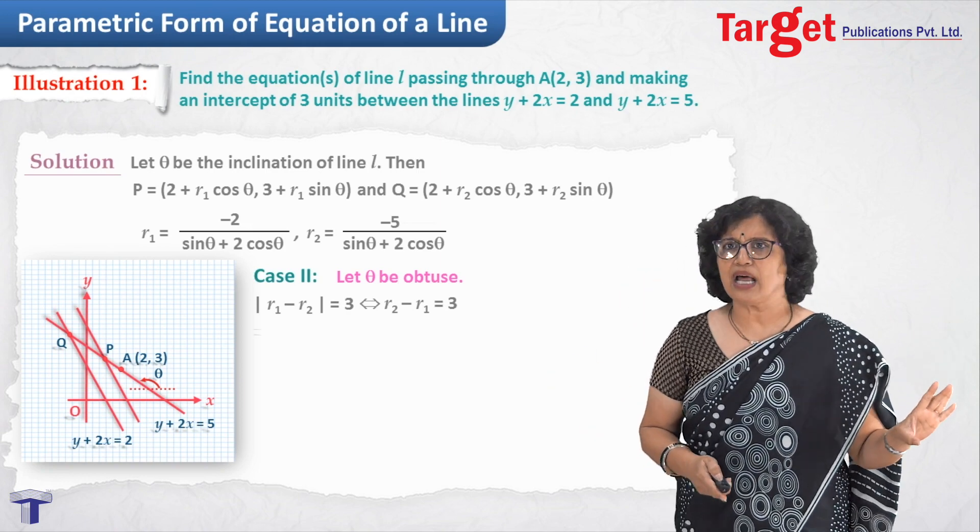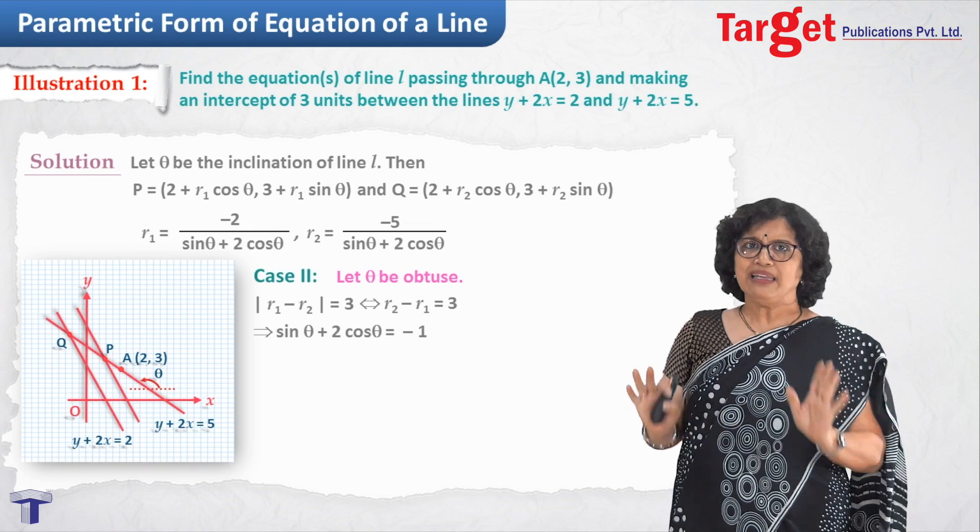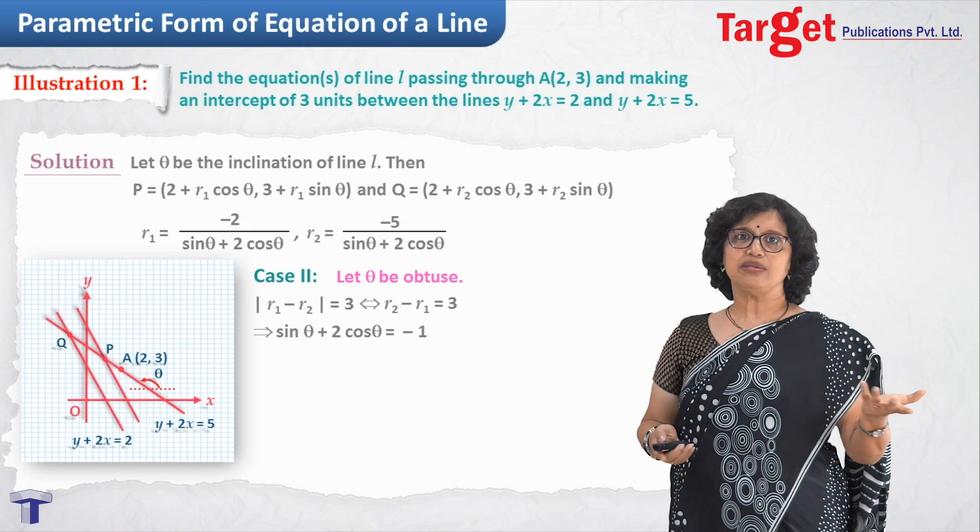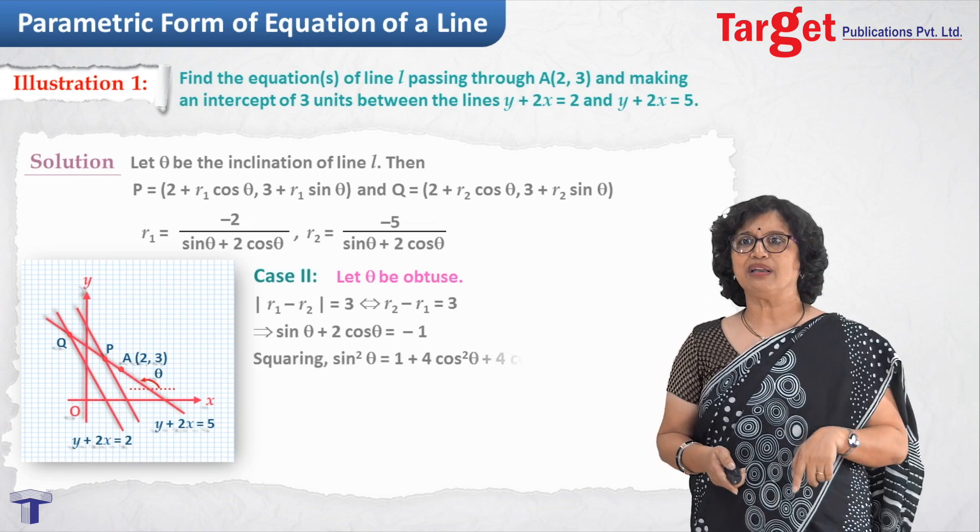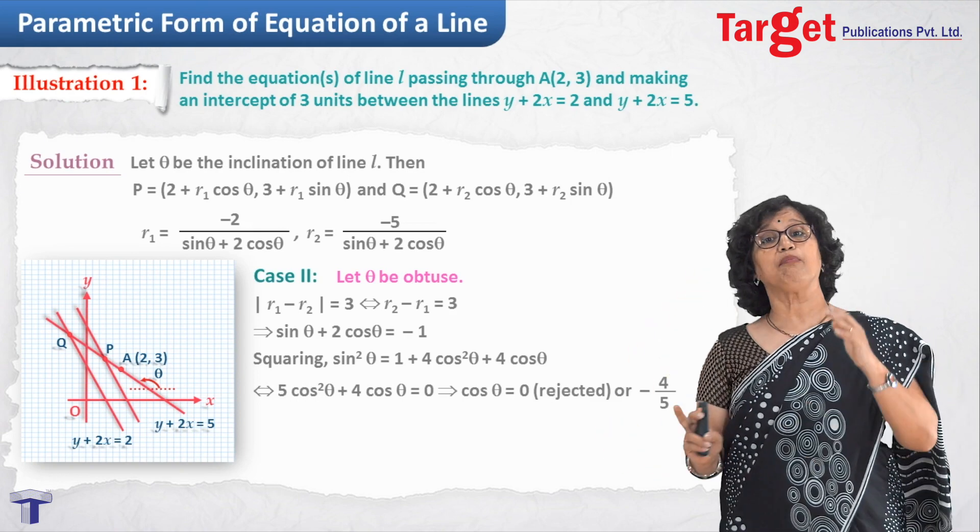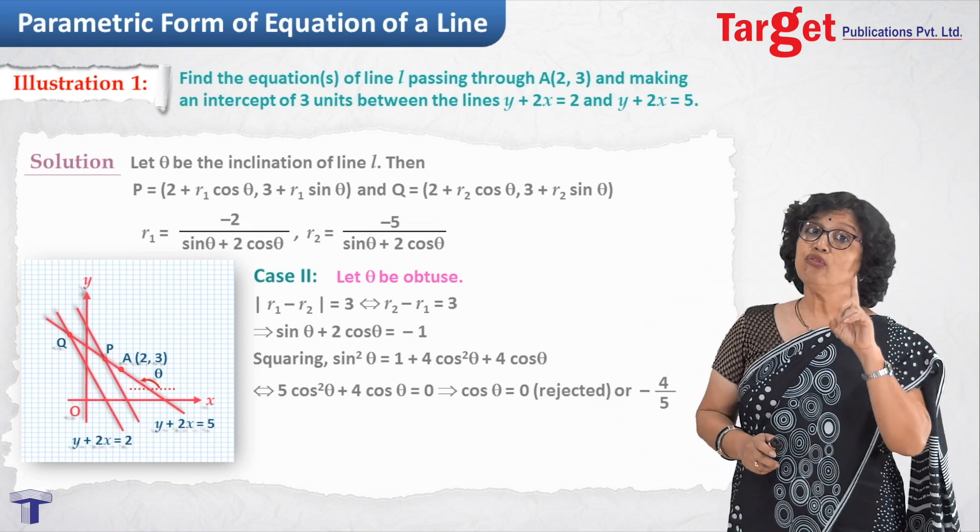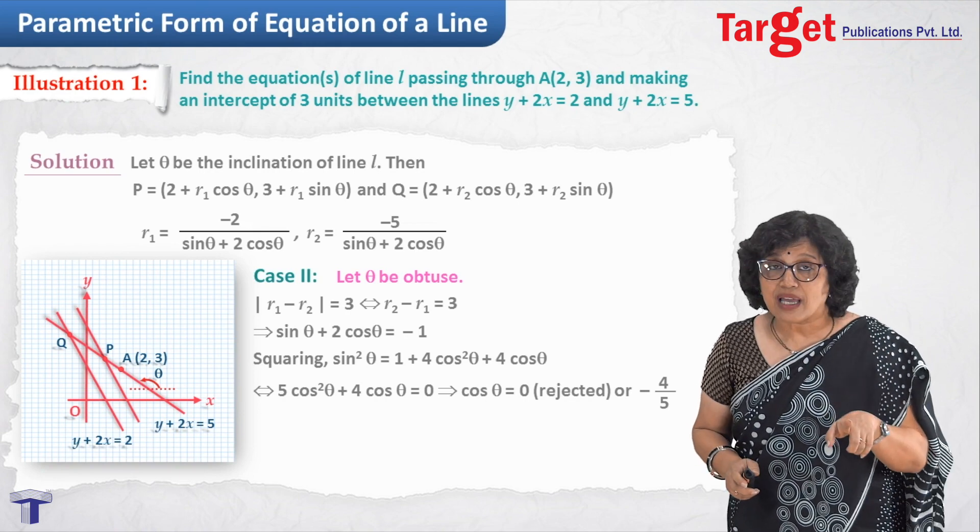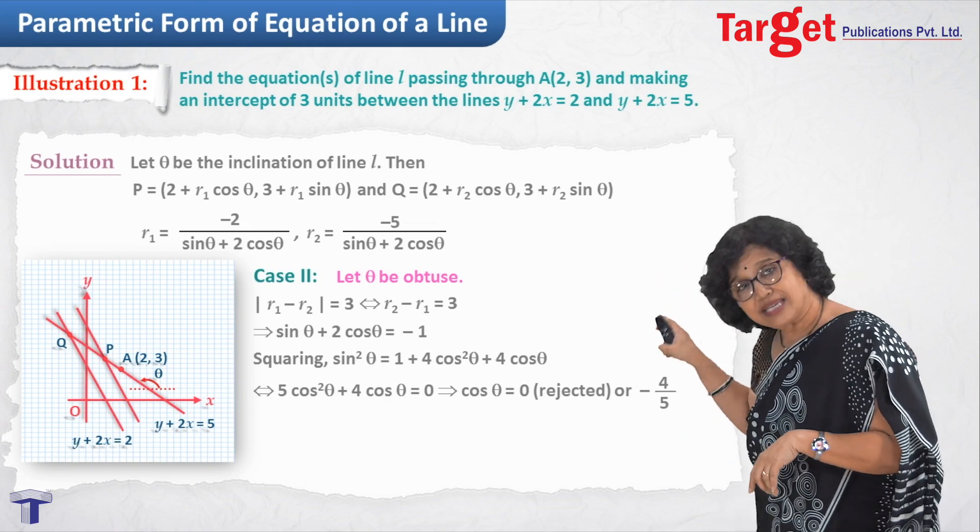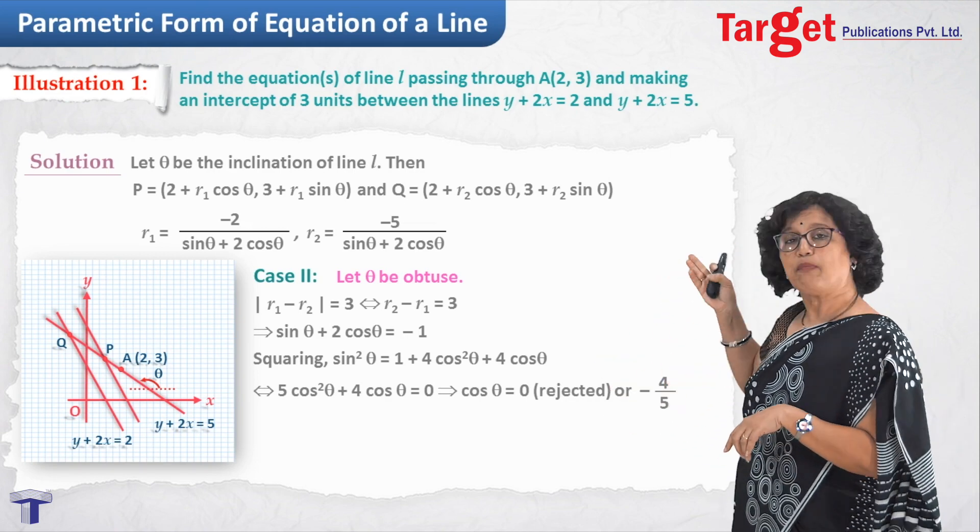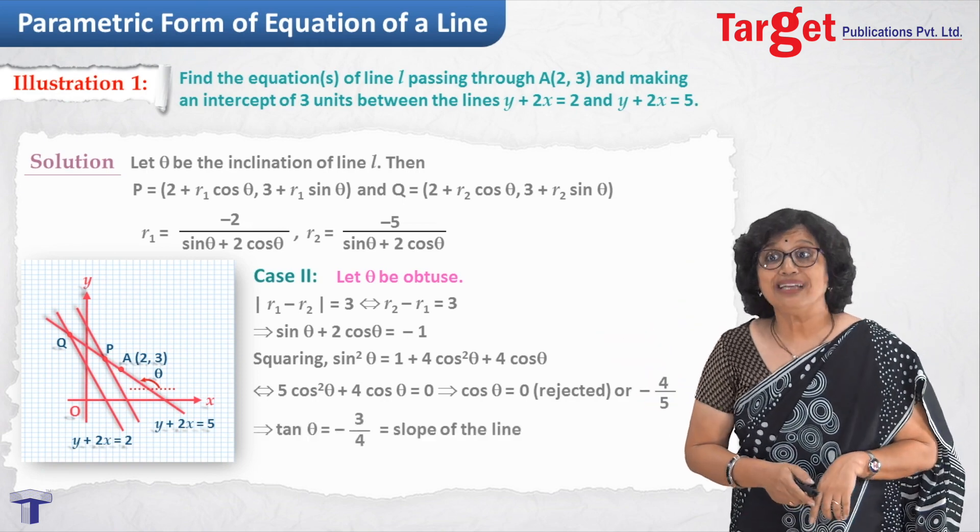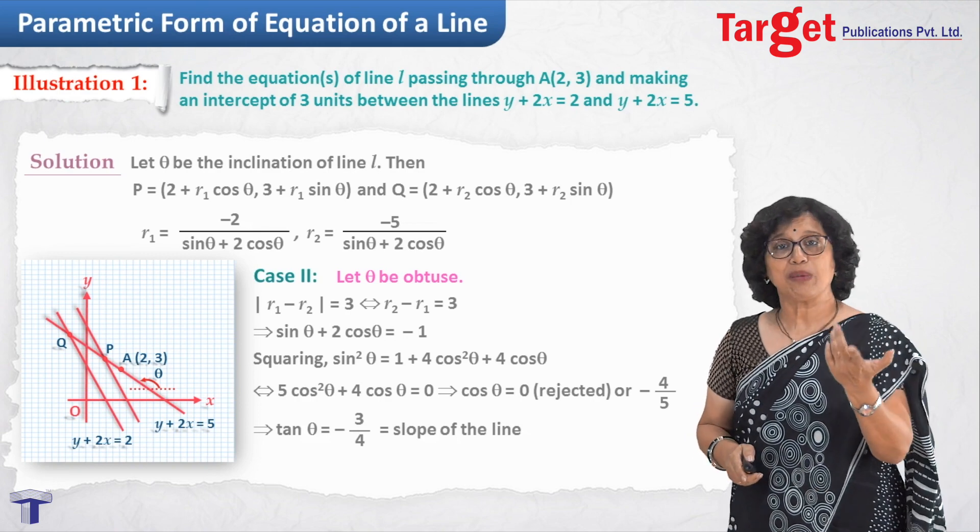Now, again, substitute expressions for r1 and r2 and simplify. Finally, you will get equation as sin theta plus 2 cos theta equal to minus 1. But this again immediately doesn't give you theta. You will have to write in one trigonometric ratio, square and simplify that further. And that would give you 5 cos square theta plus 4 cos theta equal to 0. One option could be cos theta equal to 0 which I am rejecting because theta equal to pi by 2 we have already taken in the first case. And second option is nothing but 5 cos theta plus 4 equal to 0. That leads to cos theta equal to minus 4 by 5. And that would give me tan theta as the slope and that is minus 3 by 4.